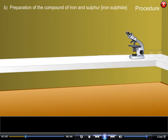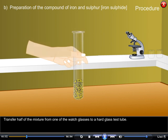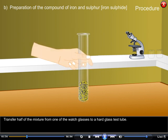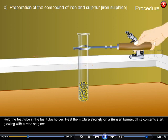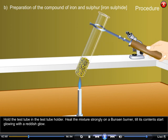B. Preparation of the compound of iron and sulphur (iron sulphide): Transfer half of the mixture from one of the watch glasses to a hard glass test tube. Hold the test tube in the test tube holder. Heat the mixture strongly on a Bunsen burner till its contents start glowing with a reddish glow.